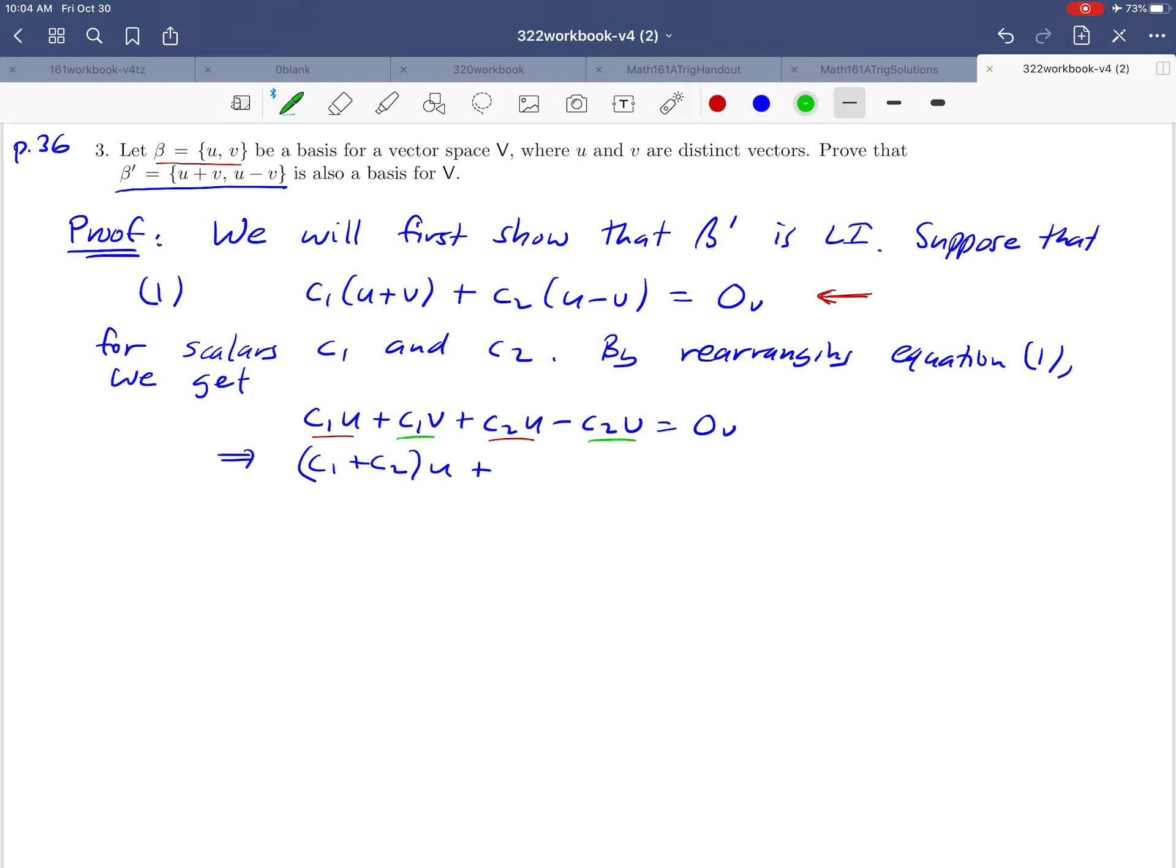And we've got a couple of terms that involve v. We'll put those together: (c₁ + c₂)u + (c₁ - c₂)v = 0.